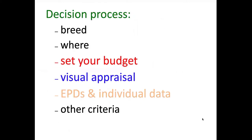When we think about that process, the first thing is we need to decide what breed is appropriate for your operation and your goals. Who or where do you want to buy those bulls from? Set a budget for what's realistic for you to spend. We need to evaluate those bulls from a visual appraisal standpoint, evaluate them based on their EPDs, and in some situations, individual data as well, along with some other criteria.